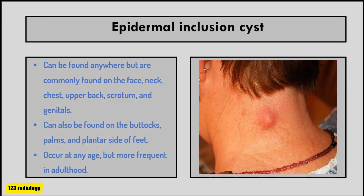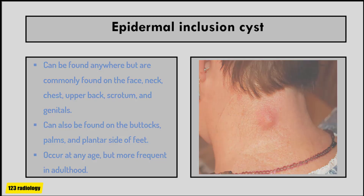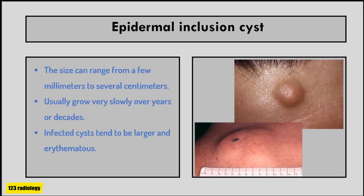Epidermoid cysts can be found anywhere but are commonly found on hair-bearing areas such as the face, neck, chest, upper back, and scrotum. They can also be found on the buttocks, palms, and the plantar side of feet if due to penetrating trauma. The epidermoid cyst can occur at any age but is more frequent in adulthood. The size can range from a few millimeters to several centimeters in diameter, and lesions may remain stable or progressively enlarge over time.